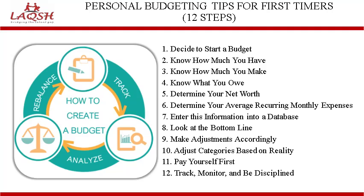Ideally, during this step, you will find that you are living within your means and may even have a little leftover on a monthly basis. On the flip side, you may determine you must make adjustments to your monthly expenses in order to live within your means. The next step is to make adjustments accordingly. If the bottom line of your budget proved that you are overspending your monthly income, you will come to the most difficult step: making cuts to your monthly expenses.